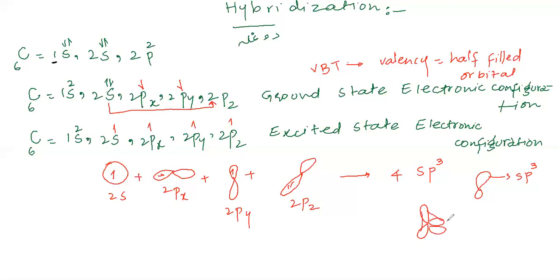We represent SP3 hybridization like this — this is tetrahedral geometry, and the bond angle becomes 109.5 degrees. SP3 hybridization produces four equivalent orbitals with tetrahedral geometry.